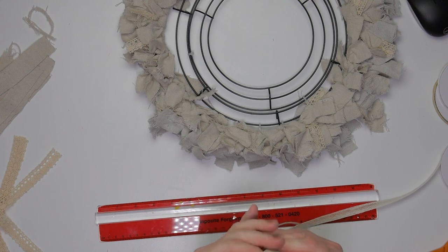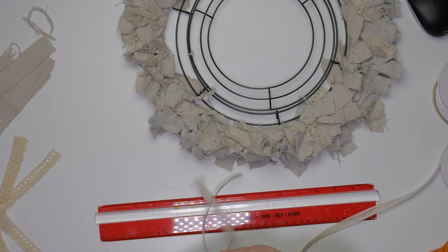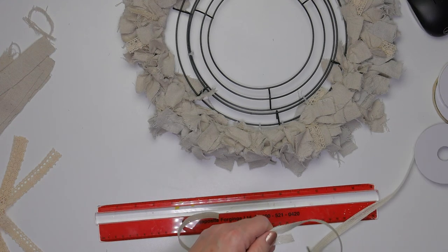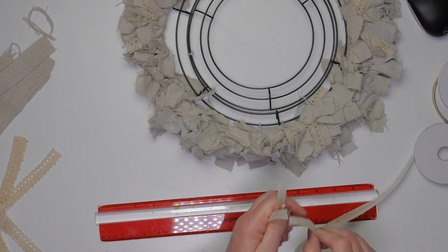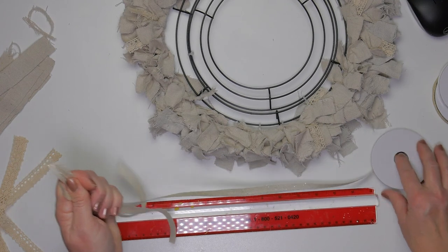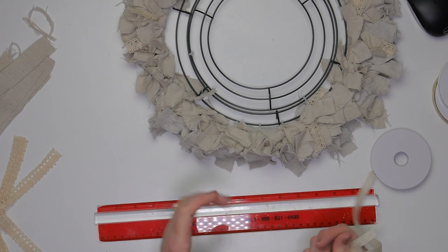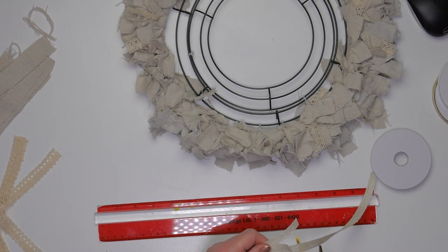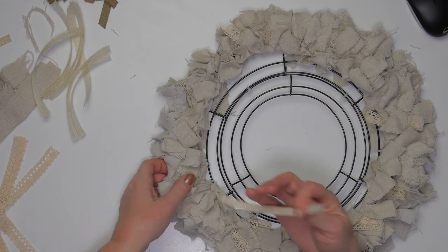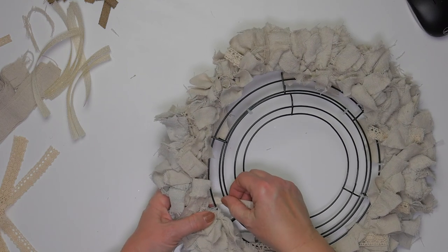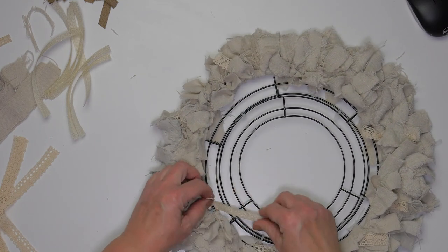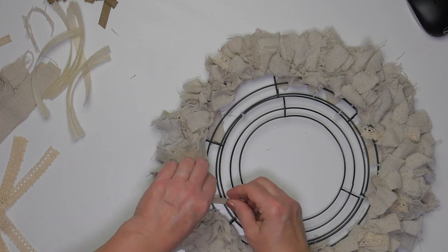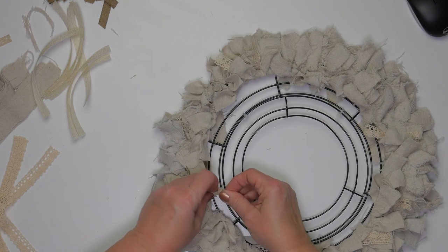And then I also have some ribbon that I had picked up at Michael's, actually on sale, I believe, last year after Christmas. And I'm just going to intersperse these thinner, more vibrant ribbons throughout this wreath. Some of them are shiny, like shiny gold, and there's like three or four different ribbons that I interspersed throughout this whole project.